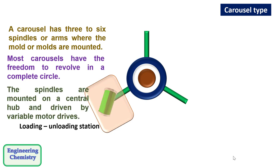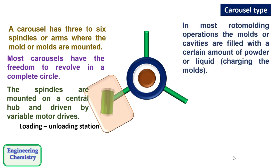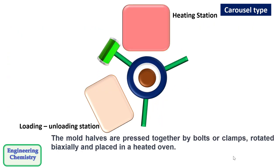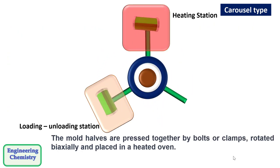The spindles are mounted on a central hub and driven by variable motor drives. In most rotomolding operations, the molds or cavities are filled with a certain amount of powder or liquid which is called charging the molds. The particle size of the resin is extremely important. Generally 500 micrometer powder is the standard of the industry.